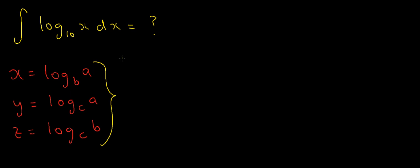One thing to mention: I want b such that b is not equal to 1. That should be quite clear — you can't really have a log of base 1, because this equation basically says b to the power of x gives me a. But obviously 1 to the power of anything is just 1, so that doesn't help.